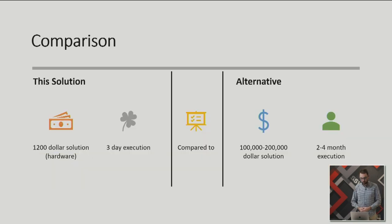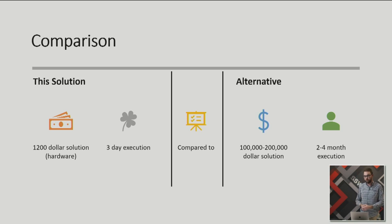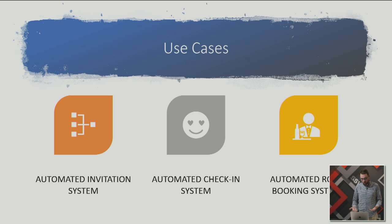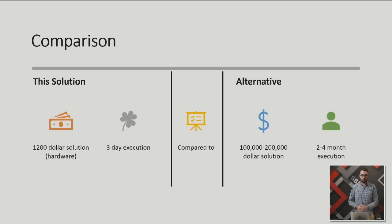In summary, comparing this solution to what was on the market: $1,200, mostly hardware, about seven stations, done in basically three days. Compare that to what was currently available - between $100,000 and $200,000 and two to four months. So in this use case it was definitely worth trying to use open source and connect that with IoT. And yes, to confirm in response to a question - that three-day execution included everything: a fully working system with the first two or three Pis working, and then the same code for the rest.